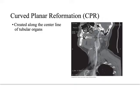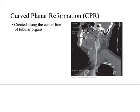Curved planar reformats are pretty fancy and normally require some kind of third-party software, though some scanners have preset curved planar reformats that work well. For example, this appears to be the common carotid artery and its bifurcation into the internal and external carotids. If you imagine the carotid arteries at the point of bifurcation — one going internal and one going external — seeing both the common carotid and the arteries after bifurcation on a single slice would be impossible in a sagittal or oblique plane because of how they diverge.